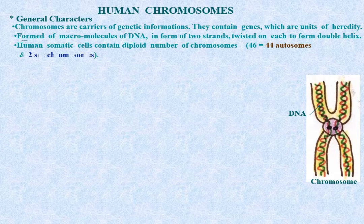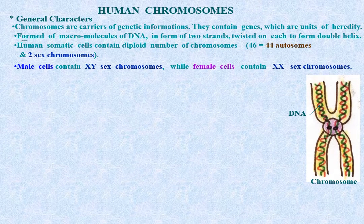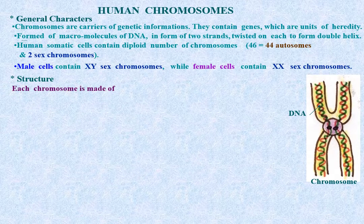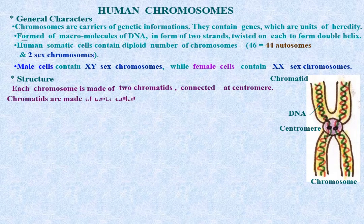Of the 46 chromosomes, 44 are autosomes and 2 are sex chromosomes. Male cells contain XY sex chromosomes while female cells contain XX sex chromosomes. Structure: each chromosome is made of two chromatids connected at the centromere. Chromatids are made of units called chromonemata embedded in the chromosomal matrix.